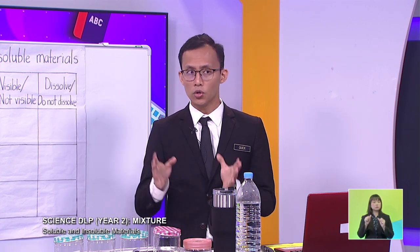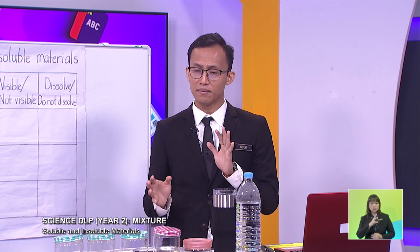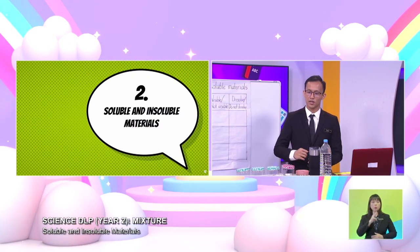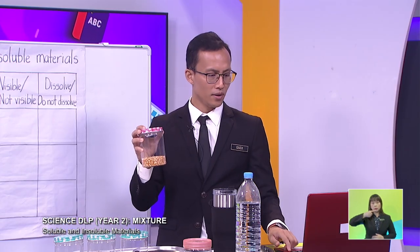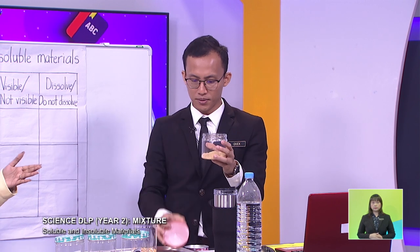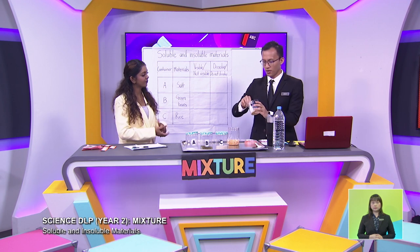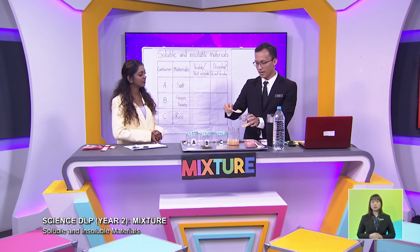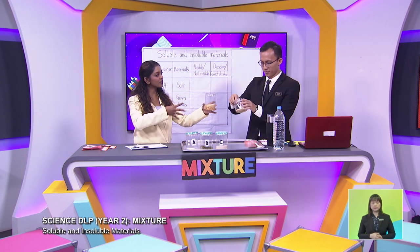Soluble materials are materials that can dissolve in water, whereas insoluble materials are materials that cannot dissolve in water. So today we are going to be experimenting that. In front of us, we have this corn kernel. We are going to do a simple experiment where we are going to place sugar inside this container filled with corn. We will see whether the sugar or the corn kernel remains after adding water inside — whether it is dissolving or not.